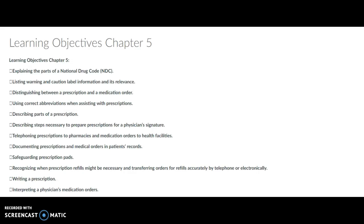Allied health professionals may be allowed to relay prescriptions verbally to a pharmacist, depending on the medical statutes of the state. In California, you are able to relay prescriptions and also scribe and write the prescription for the physician. This chapter is very important because we learned how to do this and what the different parts of a prescription are and how to properly fill that out.